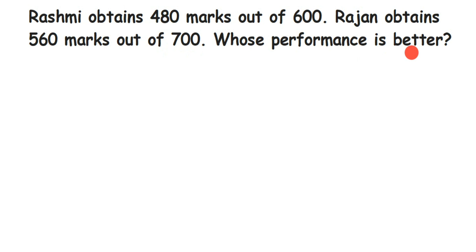So here they have given that Rashmi obtained 480 marks out of 600. We're going to find out the percentage of Rashmi first, and then later we're going to find out for Rajan who got 560 marks out of 700, and then compare who got the higher or lower percentage. I'm going to do this in two parts. The first one is for Rashmi.